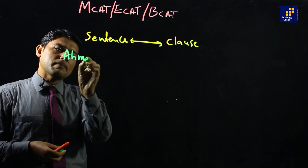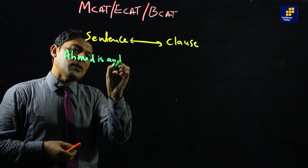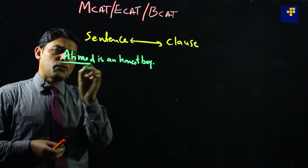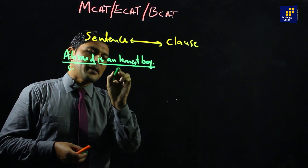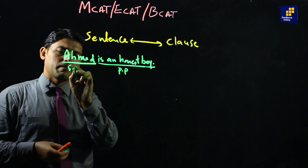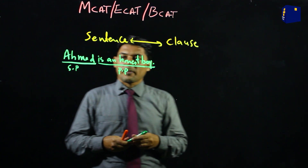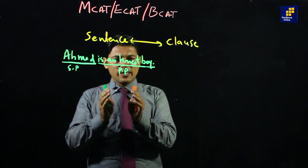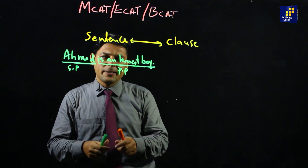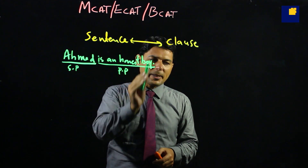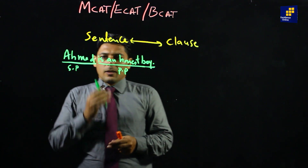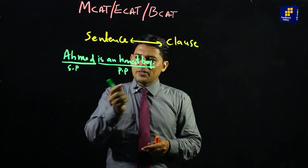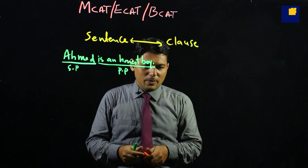The sentence is: 'Ahmad is an honest boy.' This is the subject part and this one is the predicate part. The grammarian and linguist have divided the sentence into two parts: one is the subject part and the other is the predicate part. The subject part means the topic that we are discussing about, and 90% of the time it is in the initial part of the sentence.